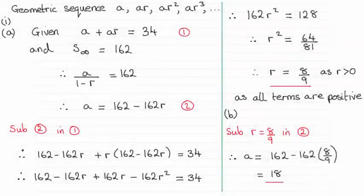Hi there. Now for this question we were told that the sum of the first two terms of a geometric sequence came to 34 and the sum to infinity was 162.